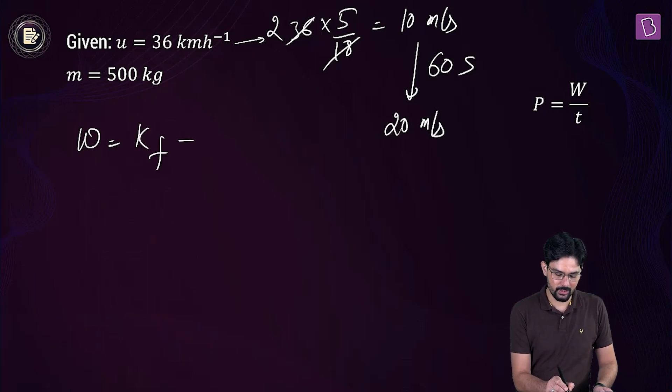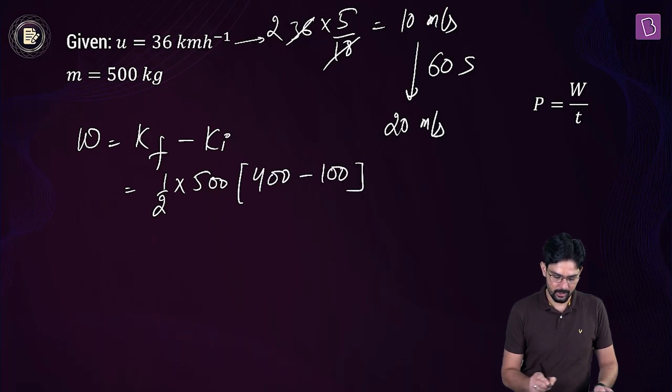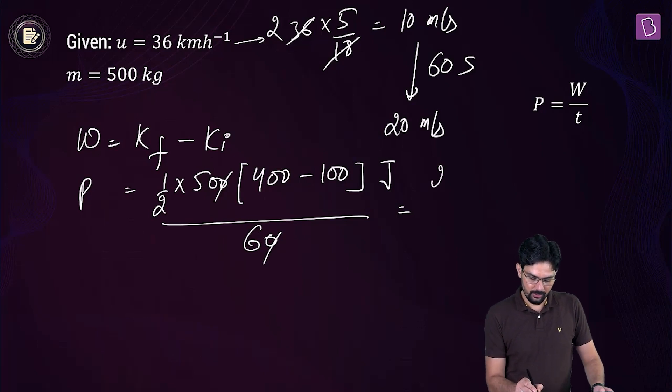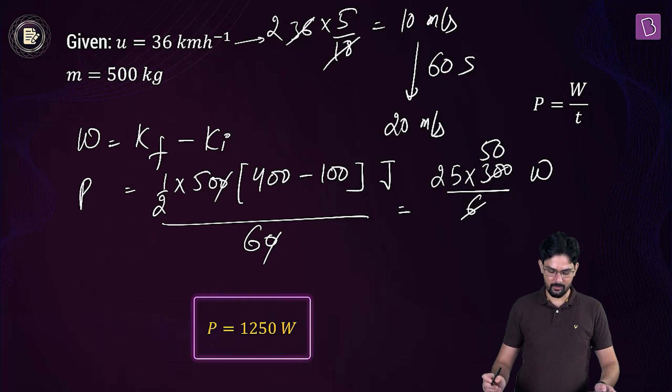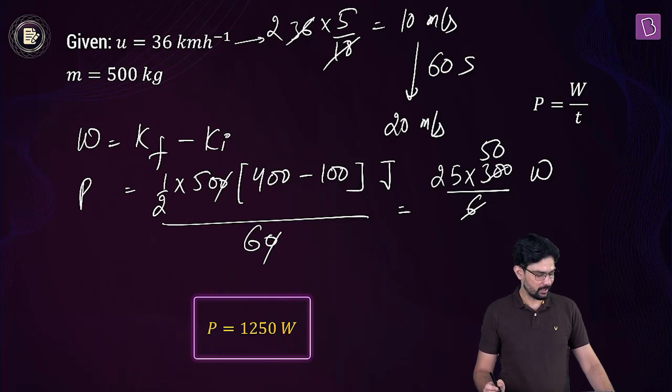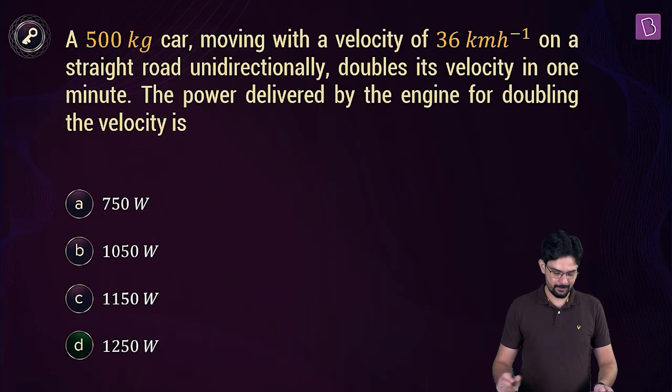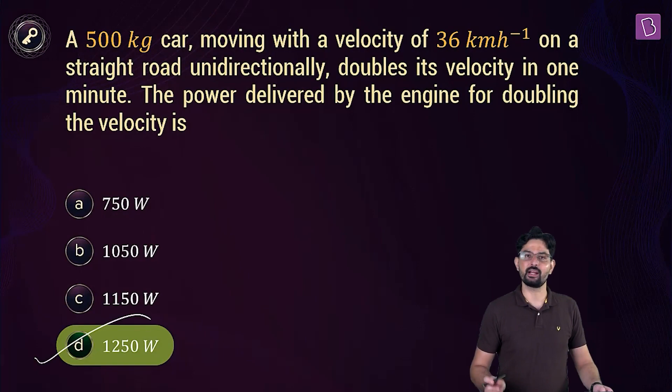So what is the work done? This is the final kinetic energy minus initial kinetic energy. This is half into M. This can be common VF square minus VI square. So 400 minus 100, and this is in joules. And to find out power, we can divide it with 60. So this is 25 into 300 divided by 6, which is nothing but 1250 watt. So this is the answer that we are trying to seek. And you can take option D as the right option.